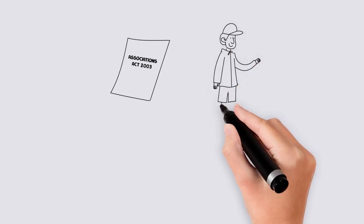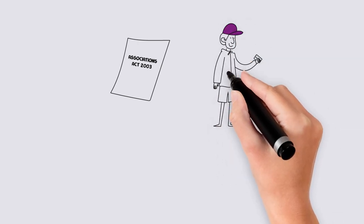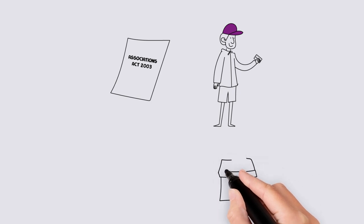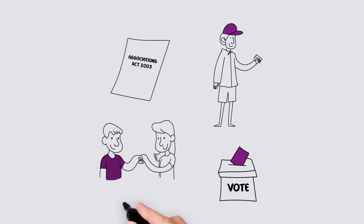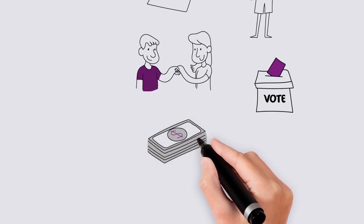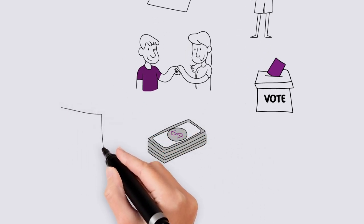Who can be a member and how to apply. The election of the committee and their powers. How to handle conflict. How to manage your funds. Rules for altering your constitution.